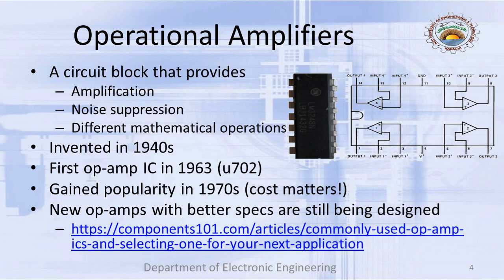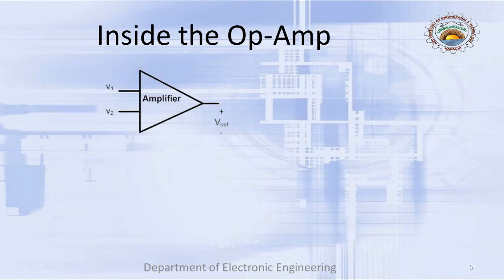Do not think that the operational amplifier is just a relic or legacy block — there are still newer versions of operational amplifiers being made. There are virtually hundreds if not thousands of models of operational amplifiers currently available. One question might arise: okay, an operational amplifier is supposed to amplify a signal — then why do we have such a large variety? What does an operational amplifier have that needs to be improved?